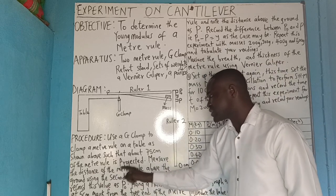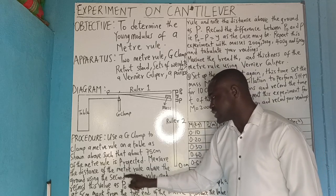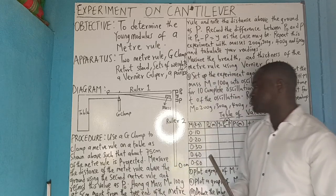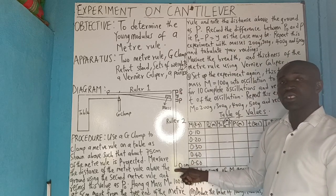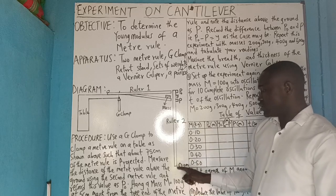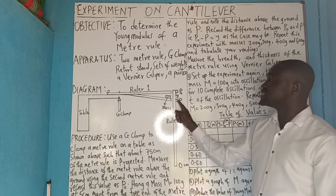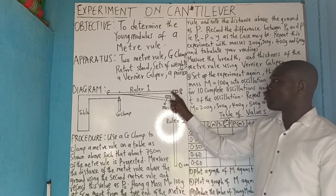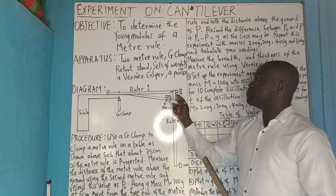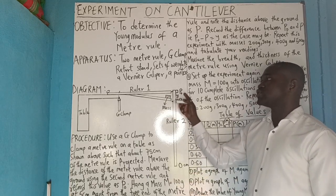Measure the distance of the meter rule above the ground using the second meter rule held vertically from zero, measuring the height of the clamped meter rule from the ground. Record this value as P₀.